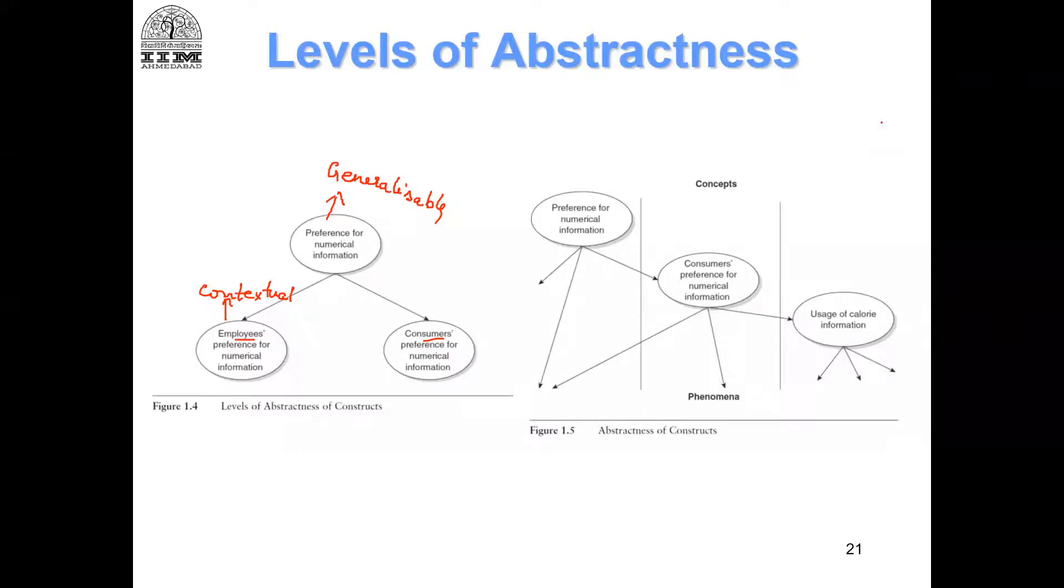So DP, that is correct. You have satisfaction, four dimensions, and four dimensions have their own items. So the four dimensions will be called as lower order factors, and then you will have satisfaction as a higher order factor.